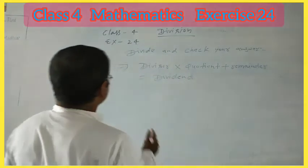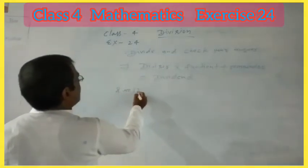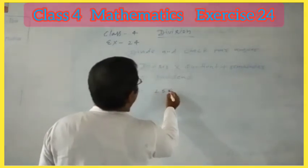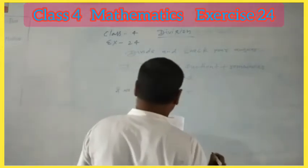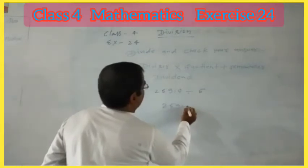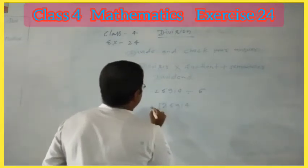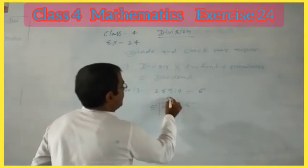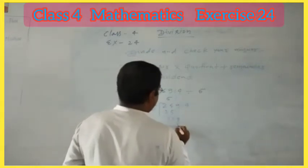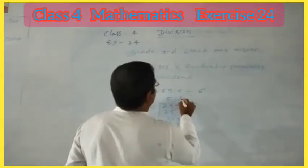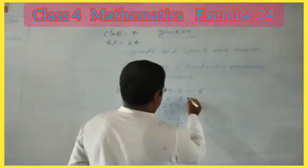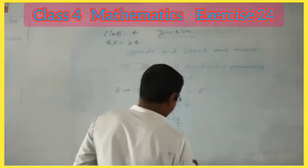Then solve question number 38: 25,914 divided by 5. 5 into 25 is 5. Here, 9: 5 into 15 is 3, remainder 4. 5 into 41 is 8, remainder 1. 5 into 14 is 2, remainder 4.